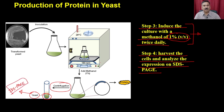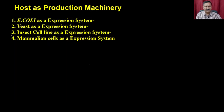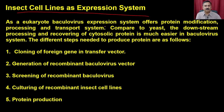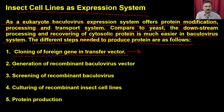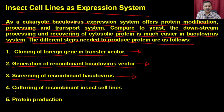Now let's move on to the next system: the insect cell line as an expression system. The baculovirus expression system, as a eukaryotic expression system, offers protein modifications, processing, and transport systems. Compared to yeast, the downstream processing and recovery of the target protein is much easier in the baculovirus expression system. The different steps to produce protein are: step one - clone the foreign gene into a transfer vector; step two - generate the recombinant baculovirus; step three - screen the recombinant baculovirus; step four - culture the recombinant insect cell lines; step five - protein production.